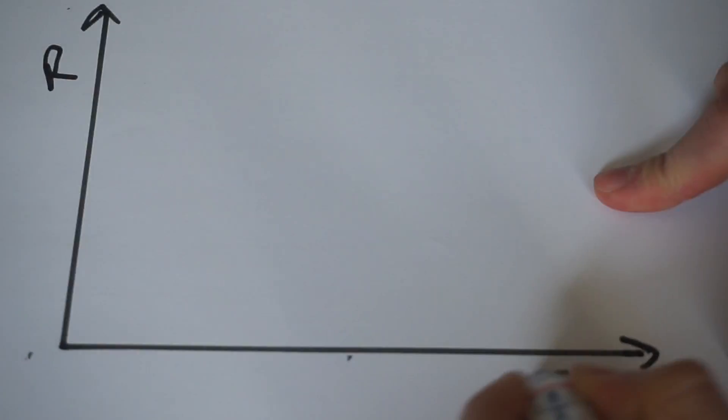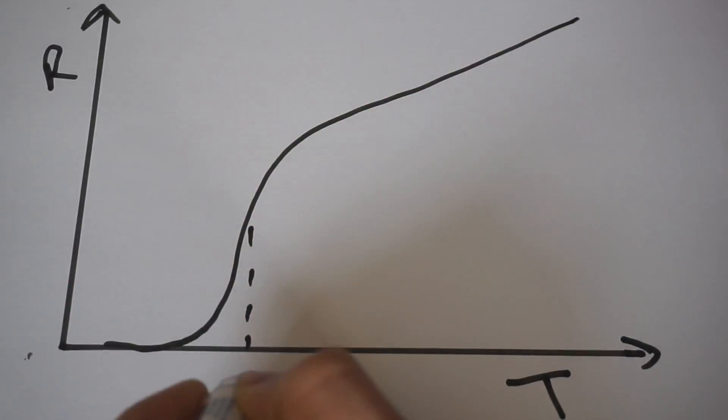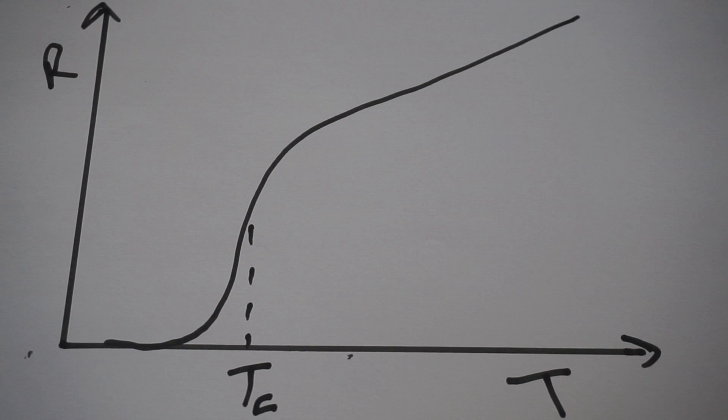On a graph of resistance against temperature, TC is the point where the resistance sharply drops off to zero, and the material stops obeying Ohm's law.